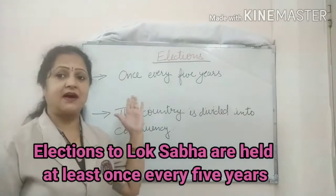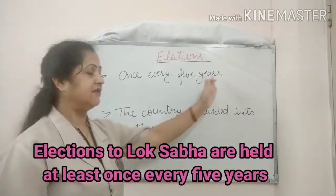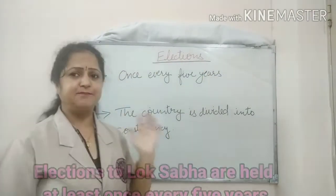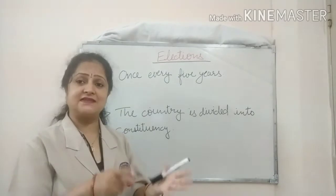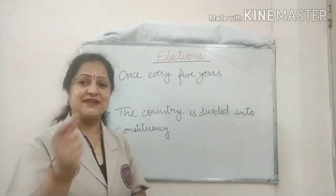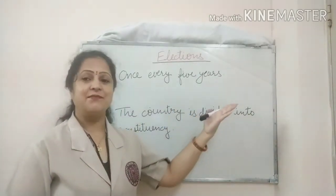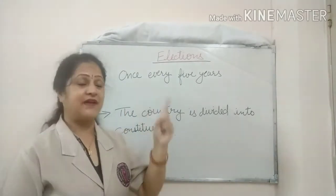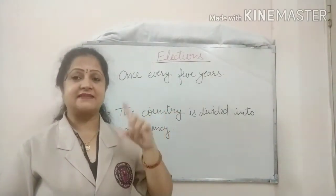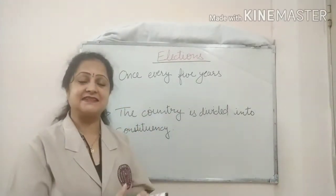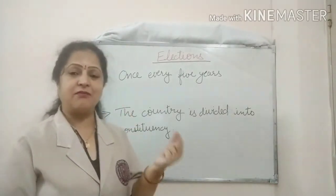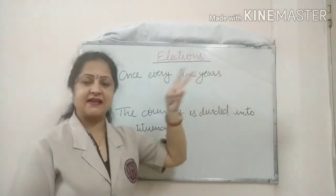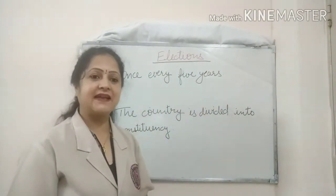Elections to the Lok Sabha are held once every five years. However, there are two exceptions: first, during the time when the President dissolves the Lok Sabha before the completion of its term, elections can be held before the completion of five years. Second, during the time of emergency, the term of the Lok Sabha can be extended by one year, meaning elections can be postponed in those cases.